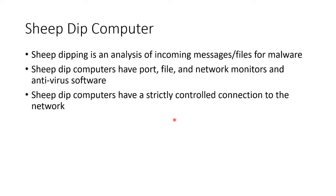Let's take a look at analyzing malware. You could set up a computer called a sheep dip computer. This is basically a computer whose sole job is to analyze incoming messages or files for malware. It will have all sorts of port monitors, file monitors, network monitors, and antivirus software on it. These are in a strictly controlled environment with strictly controlled connections to the network, and their whole purpose is to check something — let's put it on the sheep dip computer to make sure the file we got is actually clean.